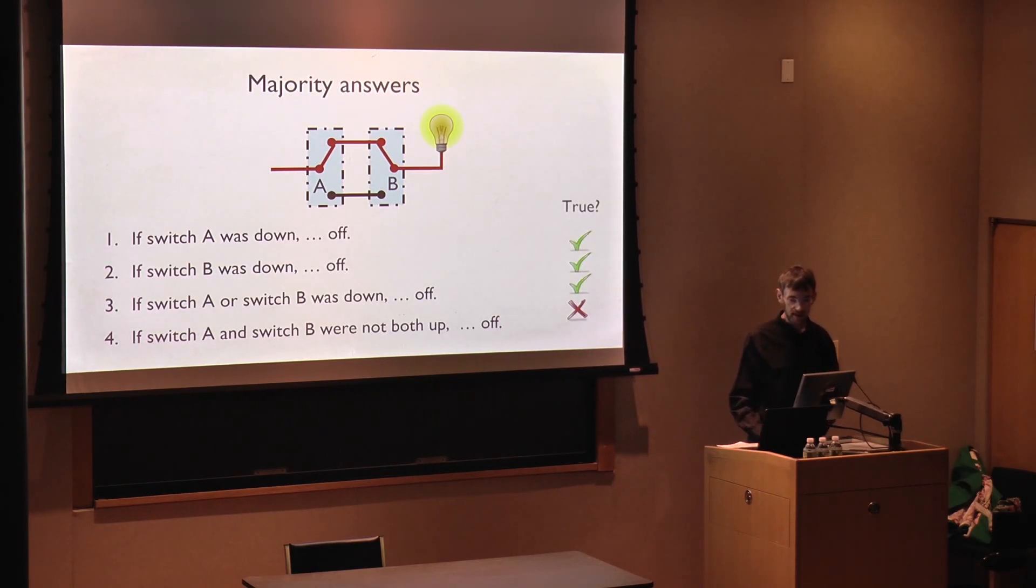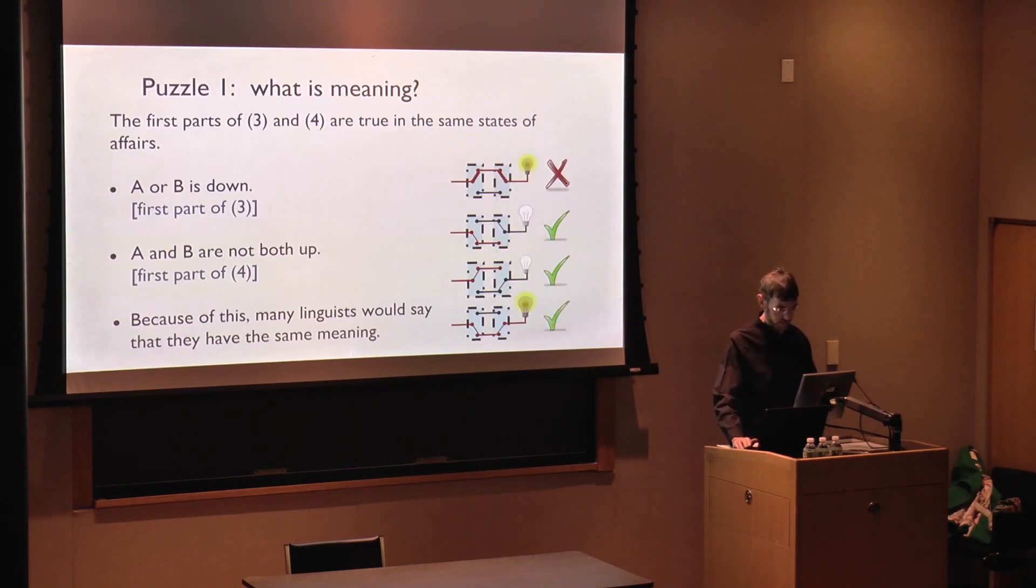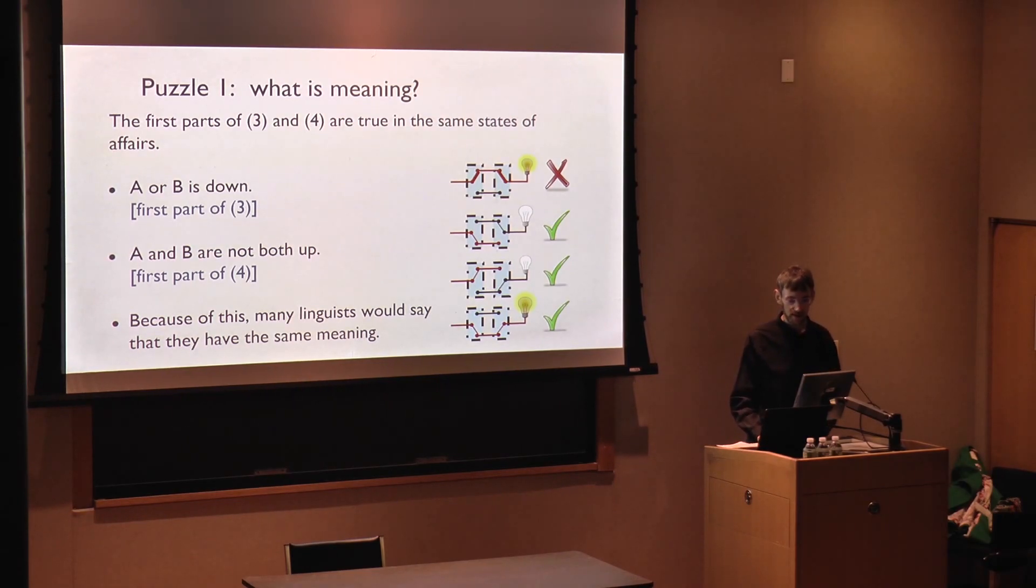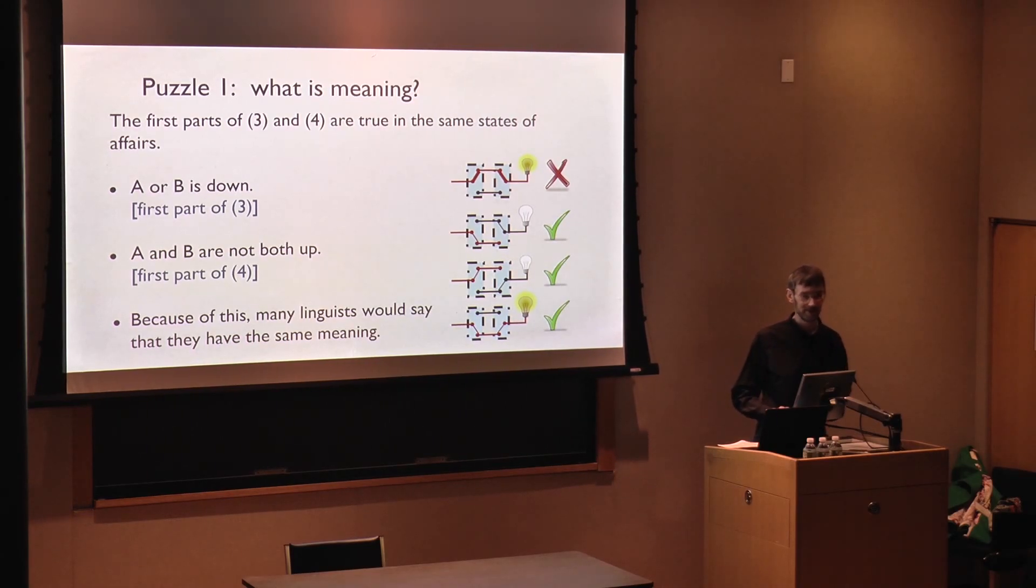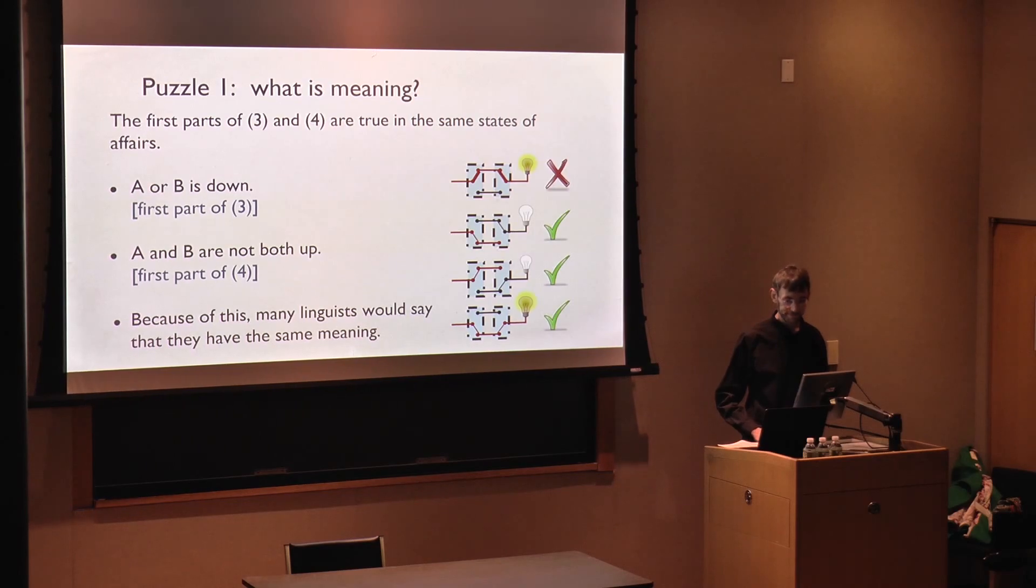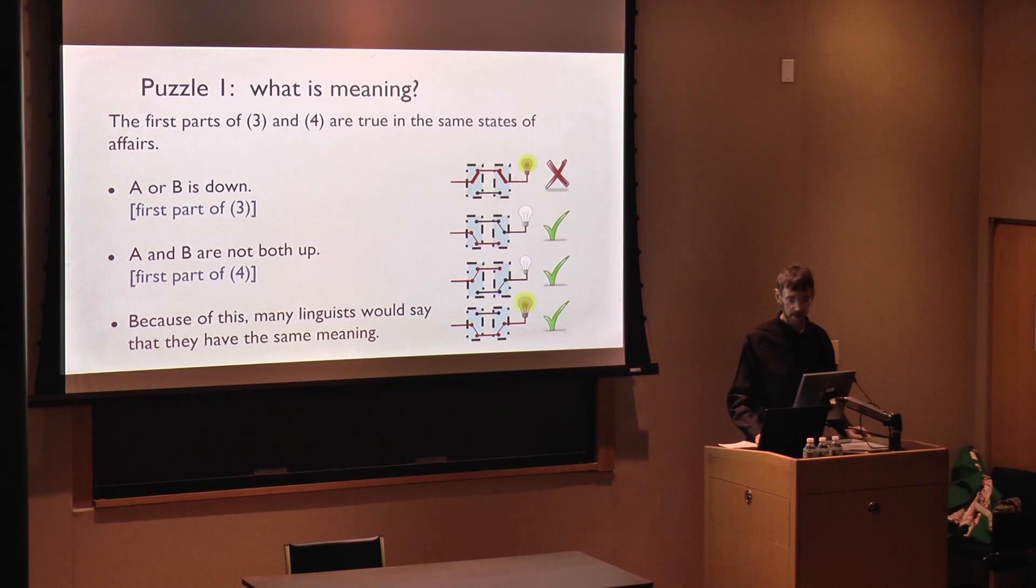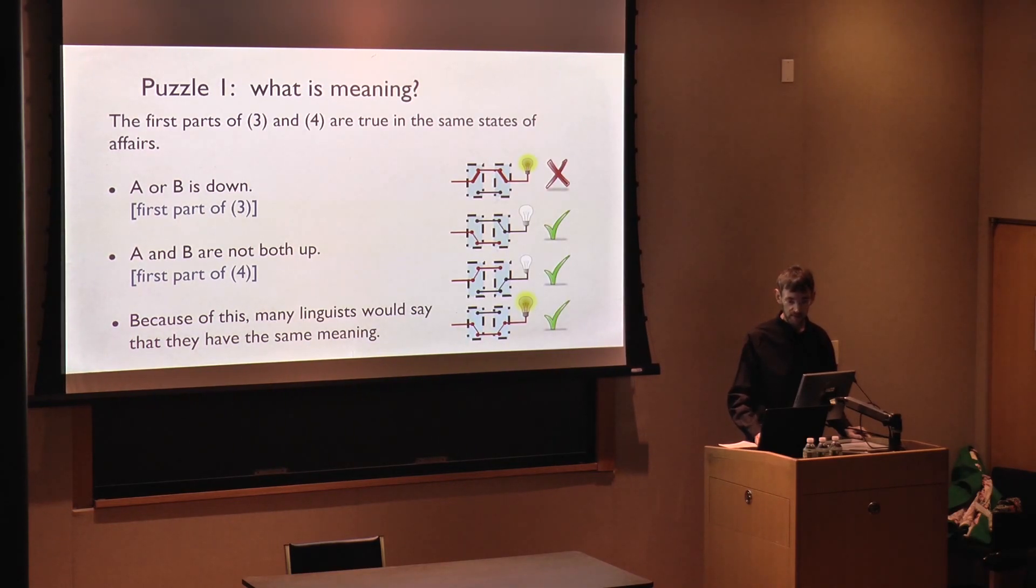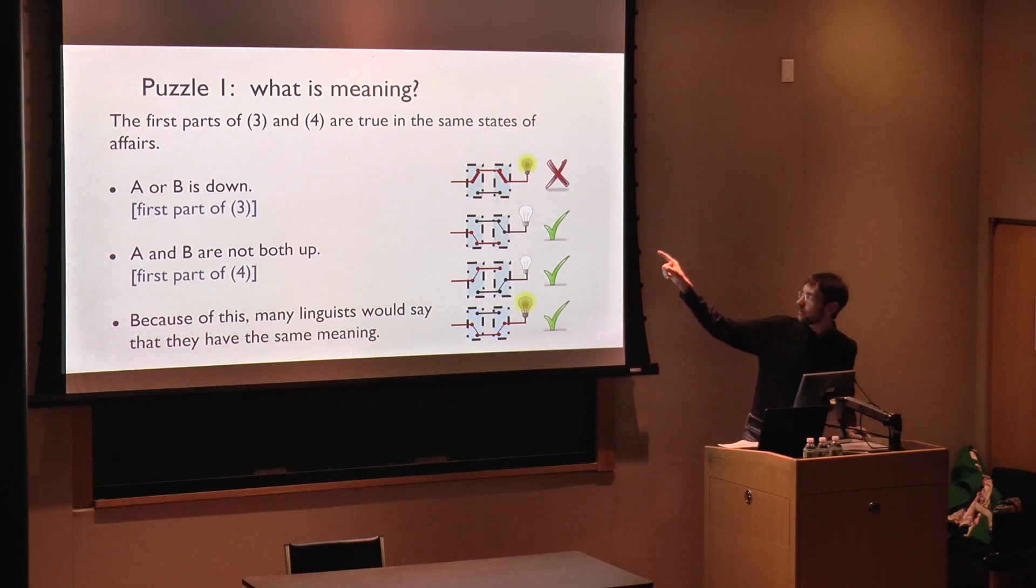So here's the sentences again, side by side, along with what you said about them and what we found in our online experiment. Now, what I would like to tell you is what's puzzling about this. There's actually two puzzles here. The first puzzle is about the nature of meaning. That's a rather philosophical question, isn't it? So it's appropriate for this building here, which is the philosophy department. Remember, I asked you earlier about simpler sentences, A or B is down, and A and B are not both down. These are the simple sentences that we started out with, not the counterfactuals that I asked you about later. Each one is true in the same state of affairs, namely the ones with the check mark that you see right here.